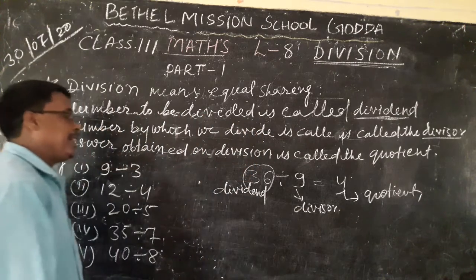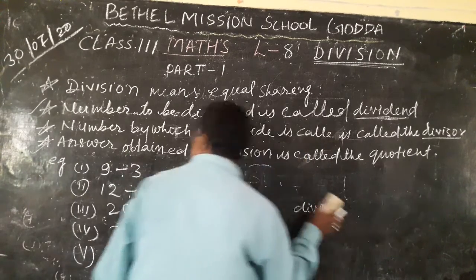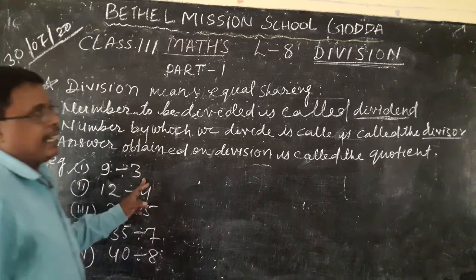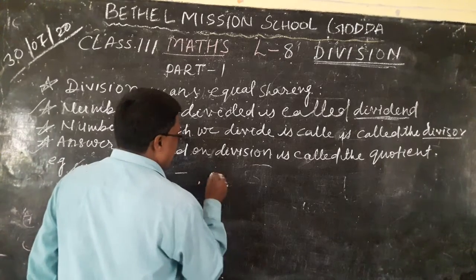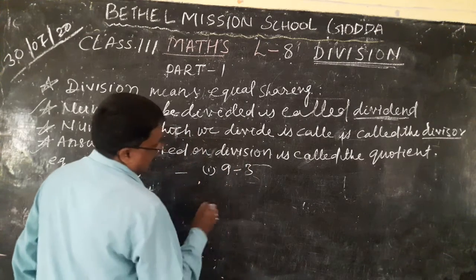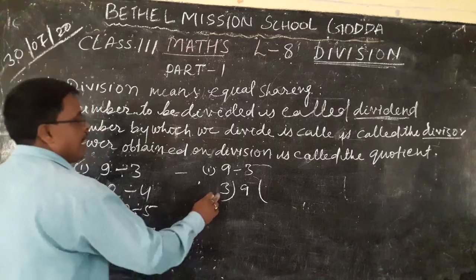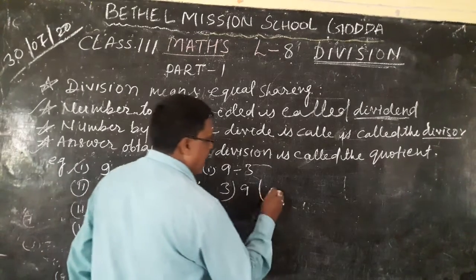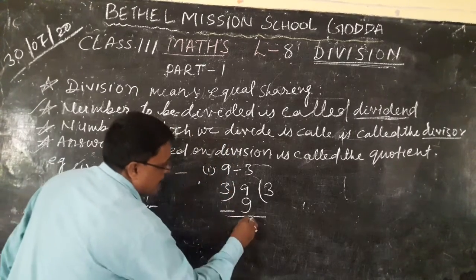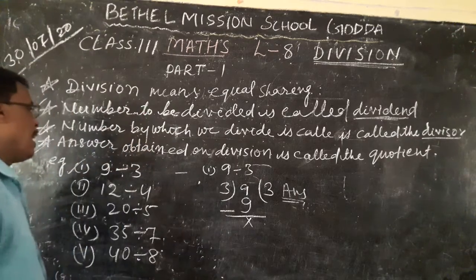Clear? What is divisor? What is dividend? And quotient? Now we take some examples. See, 9 divided by 3. How many times does 3 go into 9? 3 times 3 equals 9. So 3 is the answer. That is the division method.